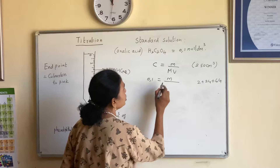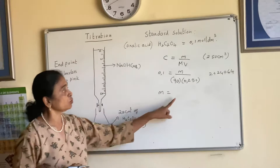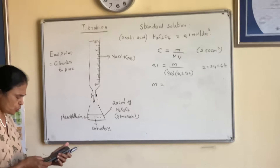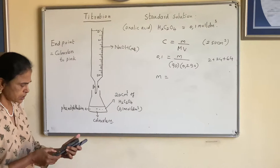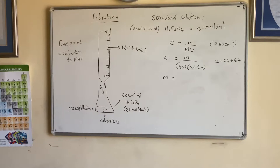That gives 64 — add them all together and the molar mass is 90. Substituting into the formula with volume 0.250 dm³, you can calculate the mass. Using the calculator: 0.1 times 90 times 0.25 equals 2.25 grams.